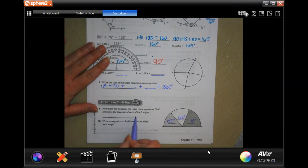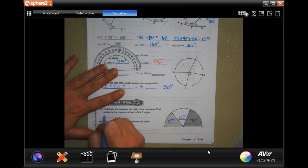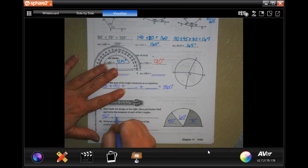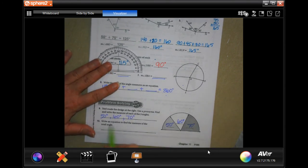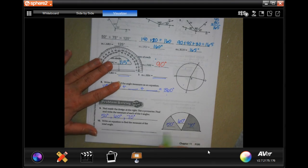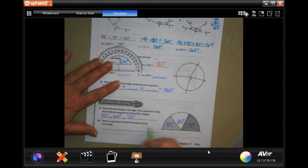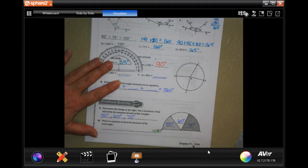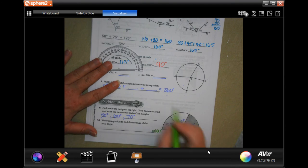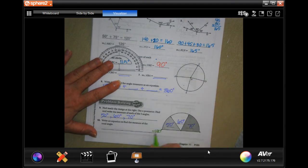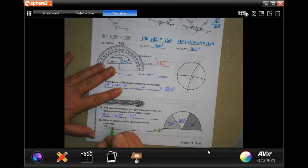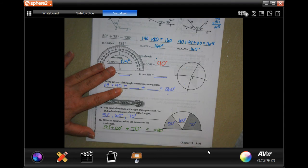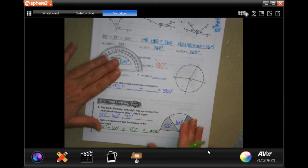So find and write the measure of each of the three angles. 50 degrees, 60 degrees and 70 degrees. Done. Now write an equation to find the measure of each angle. Well, this is a half of a circle, which means that whatever it is needs to add up to 180 degrees, because that's half of 360 degrees, a full circle, 360 degrees, a half a circle, 180 degrees. So 50 plus 60 plus 70 equals 180.